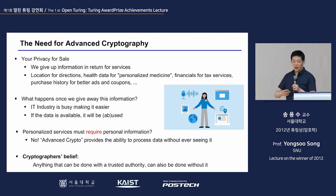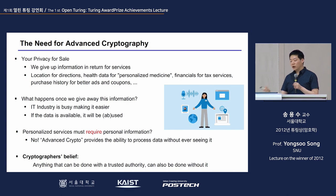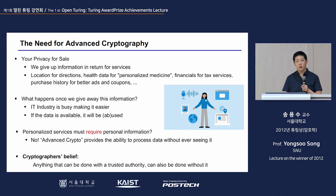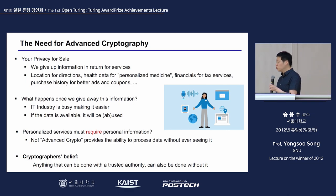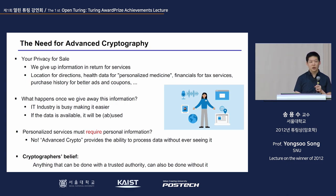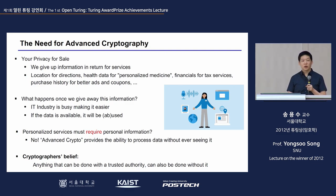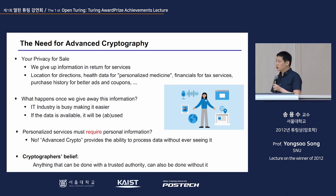The motivation behind advanced cryptography comes from the advancement of machine learning and data-driven services. IT companies started providing personalized services — location services, financial services, tailored advertisements based on purchase history — but these services were established based on users giving up their personal information. IT companies are providing services while simultaneously collecting personal information to create additional value.